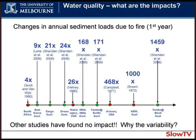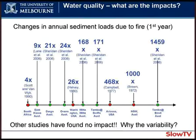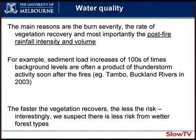How big are these increases? This graph depicts research from both Australia and overseas showing the change in annual sediment loads due to fire in the first year after fire. Results range from four times the pre-fire load to nine times, 21 times, 170 times, even 1,000 times — very, very variable. Other studies have found no impact at all. The reasons for this variability are the same suspects as for water yield changes: burn severity, the rate of vegetation recovery, and most importantly, the post-fire rainfall intensity and volume.